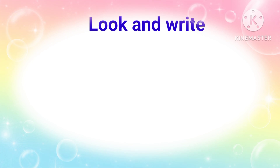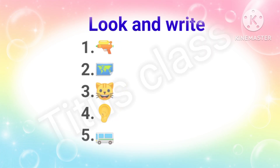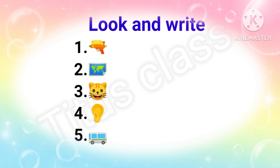Question number 1: Look and write. In this question you have to look at the pictures and write what it is. First one — what is this? Yes, this is gun, G-U-N. Second one: map, M-A-P. Third one: cat.